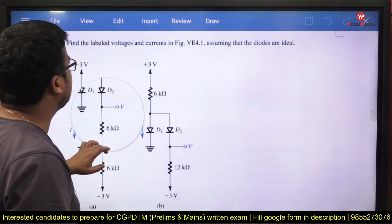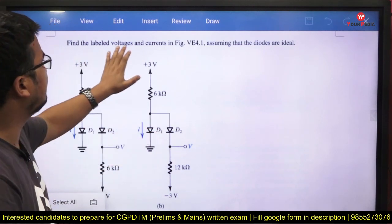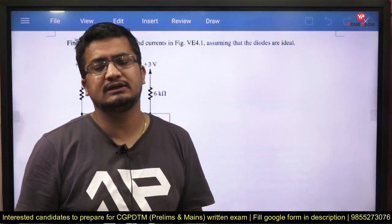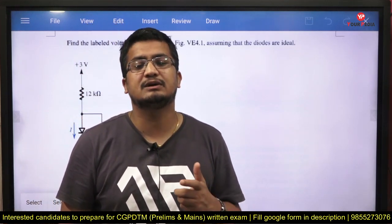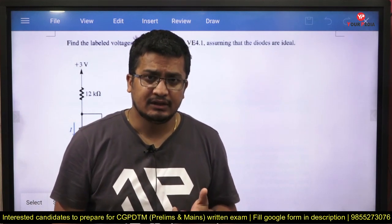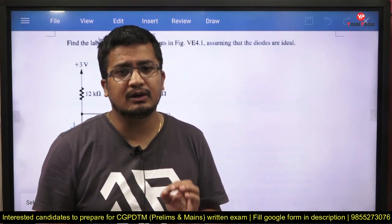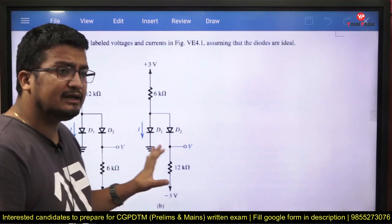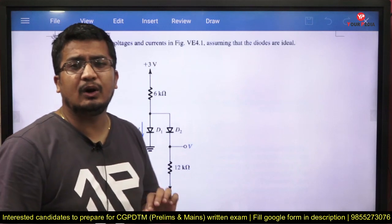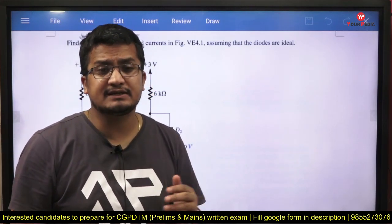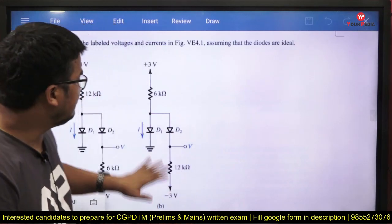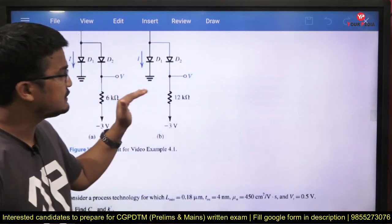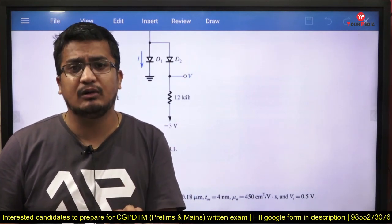The very first question is related to the diode. You need to find the voltage and current in the figure, assuming the diodes are ideal. As you know, there are multiple models of the diode: small signal model, linear model, constant voltage drop model, and ideal model. In the question it will be specifically mentioned which model to use. There are two diodes in the circuit, but nobody can tell directly by looking which will be ON or OFF. You need to start with an assumption, use network analysis tools along with diode concepts, and solve accordingly. Once you practice these two questions, you will get a very good hold on how to solve diode numericals.